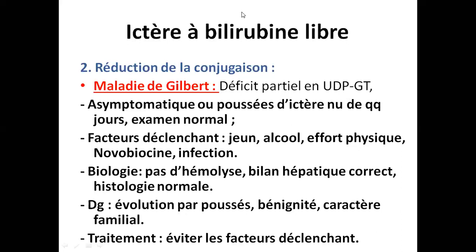En cas d'hémolyse aiguë, les urines peuvent être rouges car il y a élimination de l'hémoglobine (hémoglobinurie). Les selles restent normalement colorées car la fonction du foie est tout à fait normale. La bilirubine libre arrive au foie en excès : une partie est conjuguée normalement, mais comme il y a un excès de bilirubine non conjuguée, le foie est dépassé. Cependant, il n'y a aucun problème sur la coloration des selles.